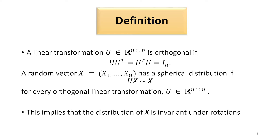If we have a random vector x which consists of the components x1, x2, ..., xn, then x has a spherical distribution if the distribution of ux, where ux is an orthogonal linear transformation u, is the same as the distribution of x. This means the distribution of x is going to be invariant under rotations.